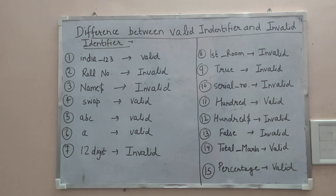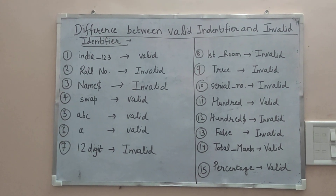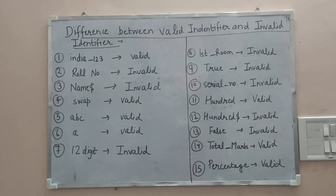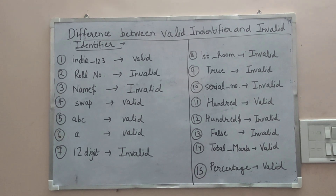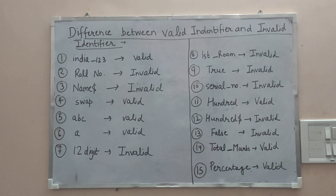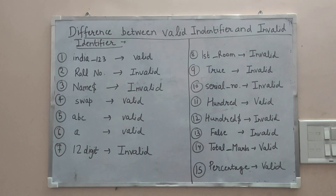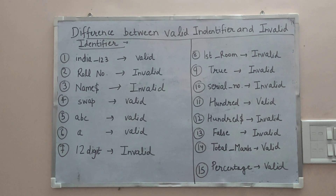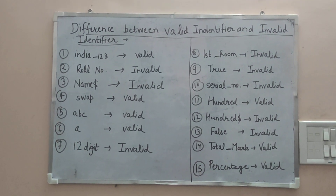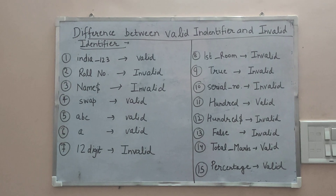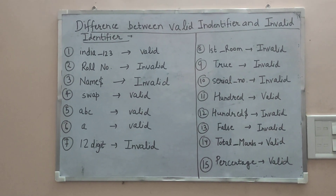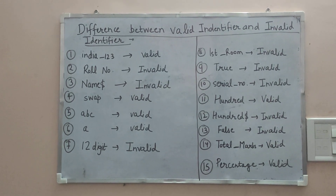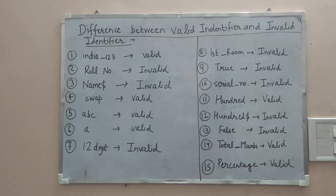The eleventh is `100` — this is considered valid. Then `100!` with an exclamation or 'and' sign is invalid. `false` is again a keyword, so it is invalid. `total_marks_` with an underscore in between is valid, since characters and underscores can be used in identifiers. The fifteenth uses a percentage sign, which is a special character and is therefore invalid.